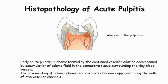Today we are going to see about histopathology of acute pulpititis. Early acute pulpititis is characterized by the continued vascular dilation, accompanied by accumulation of edema fluid in the connective tissue surrounding the tiny blood vessels. This is the abscess of the pulp horn.